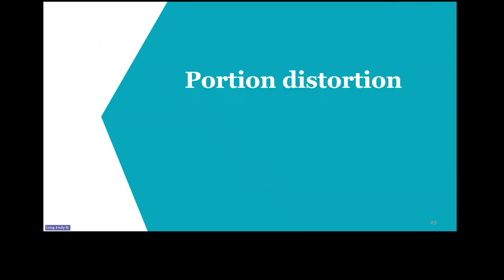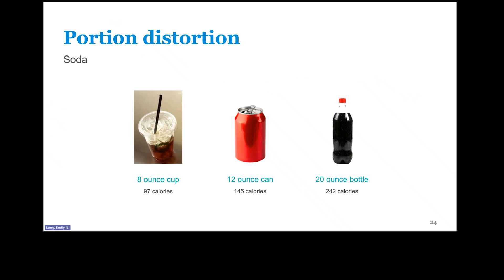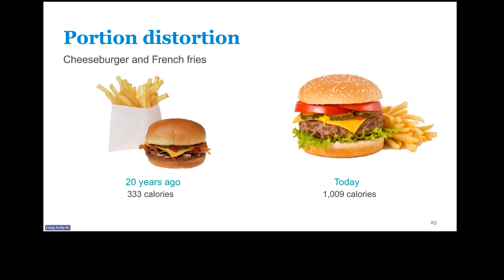We're going to talk about portion distortion. Over the past 20 years, the average portion size has grown so much and has changed what Americans think is normal. The portion size with soda can really increase our calories — there's a 48 calorie difference between a can and a cup of soda, and 145 calories between a bottle and a cup. With a cheeseburger and fries, there's a difference of 466 calories from when they were introduced at fast food restaurants 20 years ago versus today. Fast food portion sizes are now about two to five times larger than when they were first introduced.